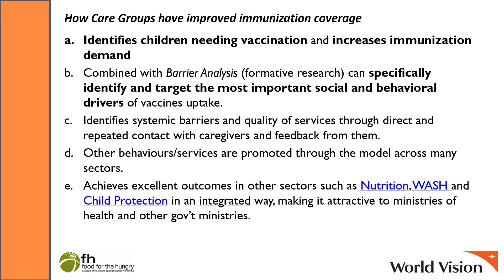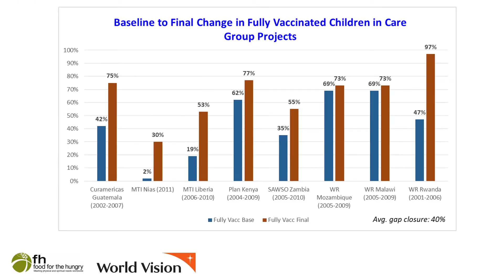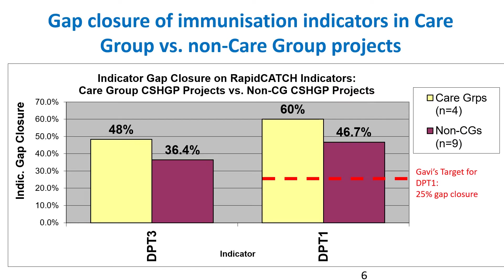Other behaviors and services can be and are promoted through the model across many sectors. Zero-dose children are also probably missing out on some of these other services, and we've seen excellent outcomes in other sectors such as nutrition, WASH, and child protection. This graph shows some baseline to final changes in the proportion of children fully vaccinated in eight care group projects, with an average indicator gap closure of 40 percentage points. This graph compares gap closure in four care group projects to nine non-care group projects and shows 32% and 28% better gap closure relatively with care groups as compared to non-care group projects.